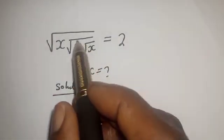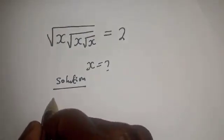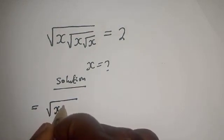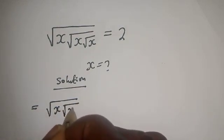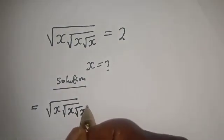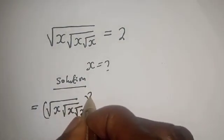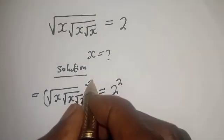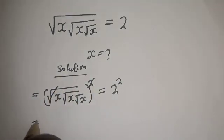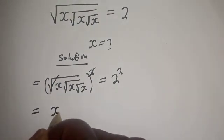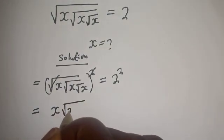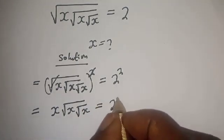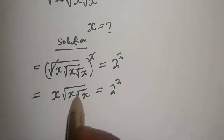In order to get the value of s, let's take the square of both sides. That is, square root of s, square root of s, square root of s — all squared — is equal to 2 squared. This will cancel, leaving square root of s, square root of s, is equal to 2 squared. Let's take the square of both sides again.